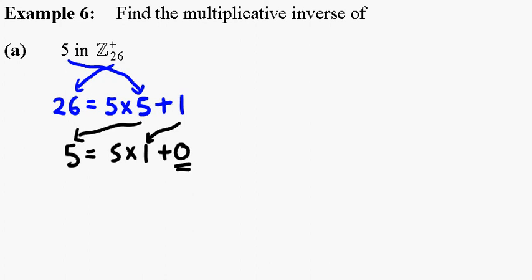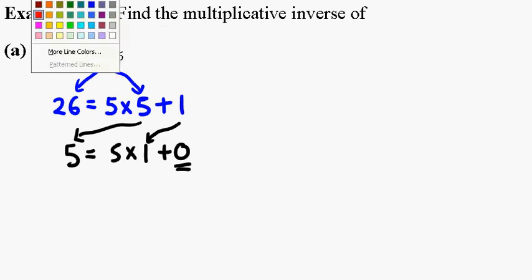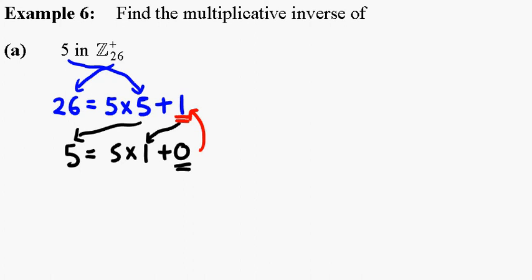So once we reach 0, we know that the previous remainder is the greatest common divisor of 5 and 26, which is 1.